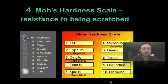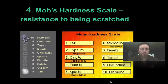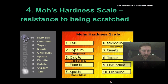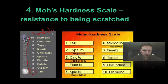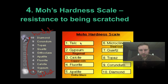Now we're going to be looking at the Mohs hardness scale, or how hard or how resistant minerals are to being scratched. As you can see from the left hand diagram, the hardness scale goes from 1 to 10, which is the hardest. The softest minerals have the lowest numbers. On the right hand side you can see a number of different minerals and where they lie on that hardness scale.